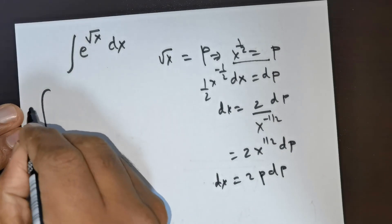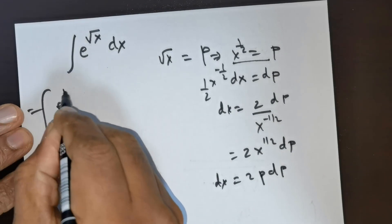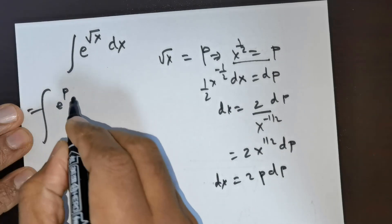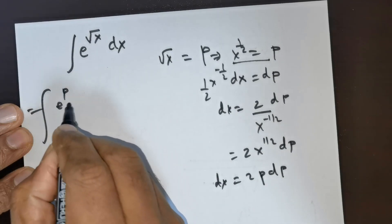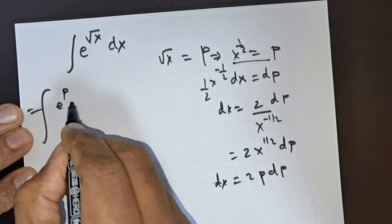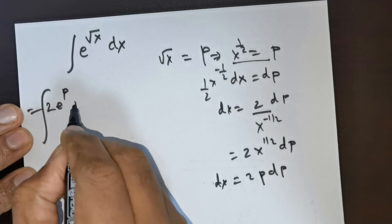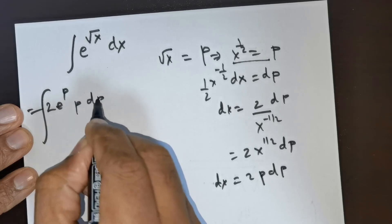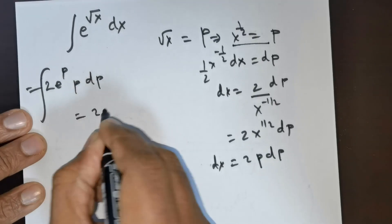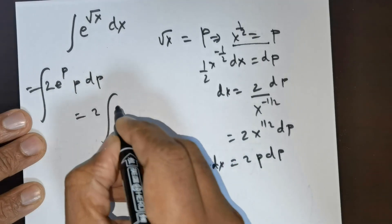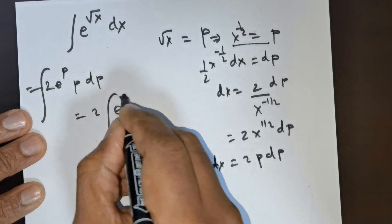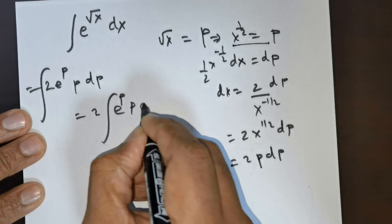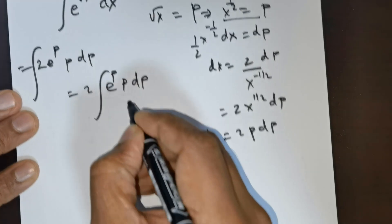Now, the integral can be rewritten as e raised to the power of p times 2 times p times dp. So this is going to be 2 times e raised to the power of p times p times dp.